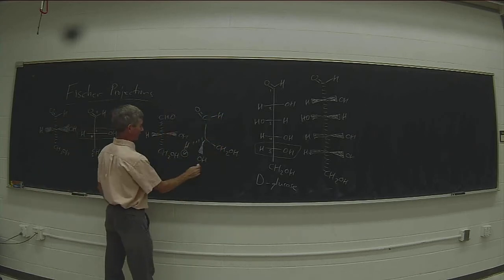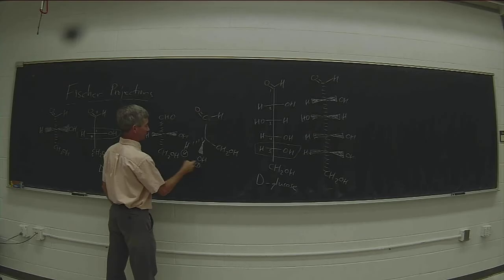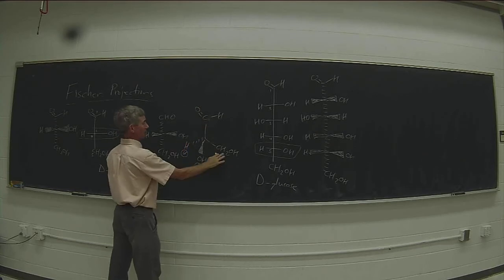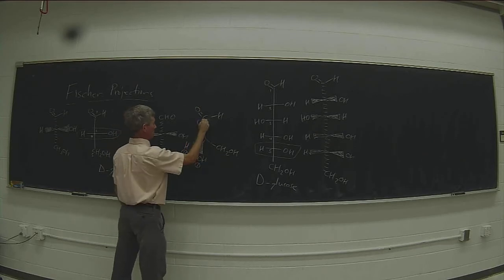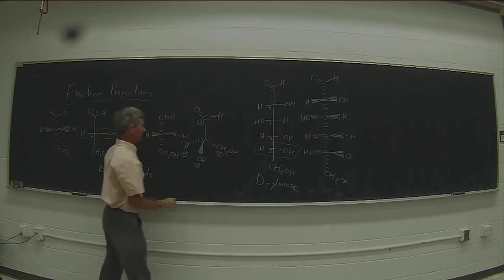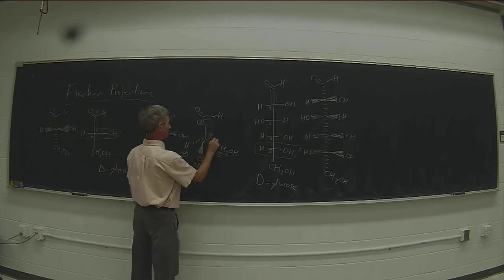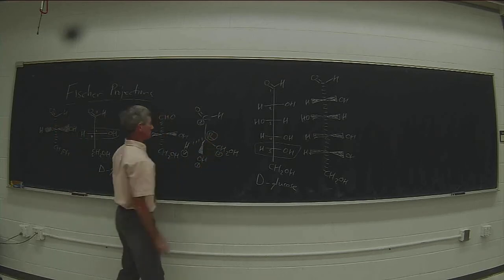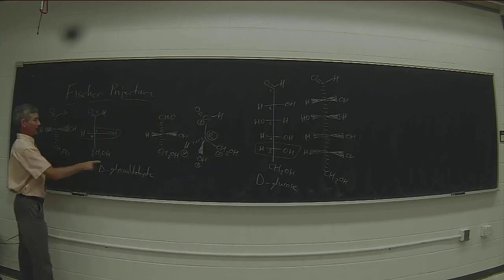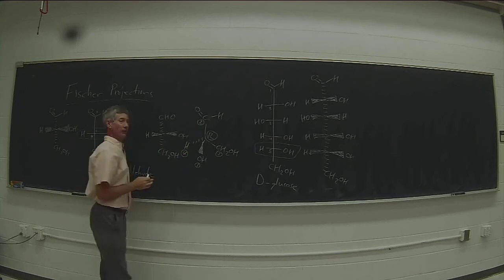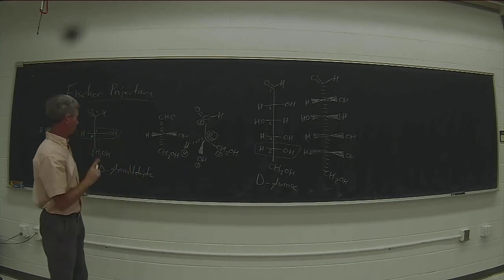Putting the hydrogen back makes it easier for me to determine the stereocenter. So the hydrogen is the last priority. The OH group is number one. This carbon outranks this carbon because it's bound to oxygen twice. And this is going to be bound to oxygen twice. And thus this is the R stereocenter. So D-glyceraldehyde has the R stereocenter at its one chirocenter.